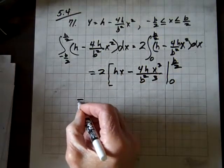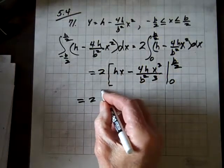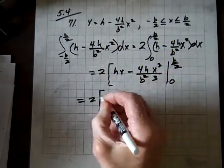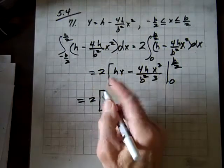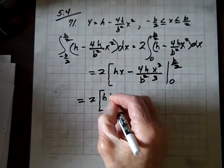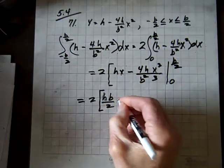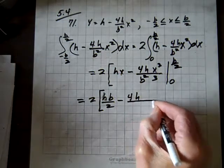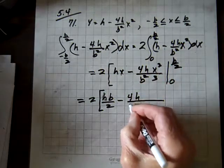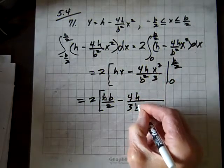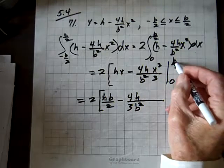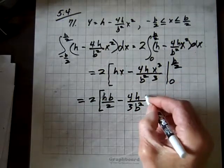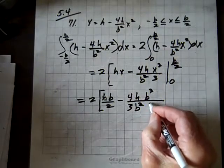And we're going to evaluate that from 0 to b over 2. And so this equals 2 times hb over 2, minus 4h, and we've got a 3b squared, and then when we put b over 2 into x cubed, we get b cubed, and 2 cubed is 8.